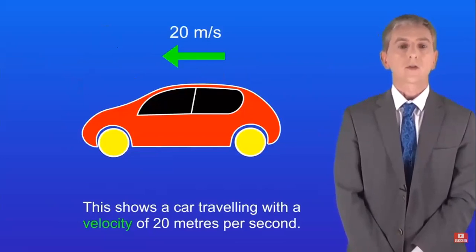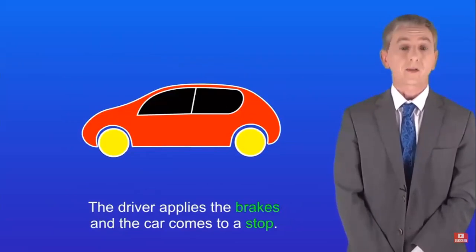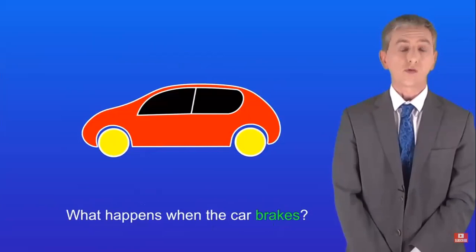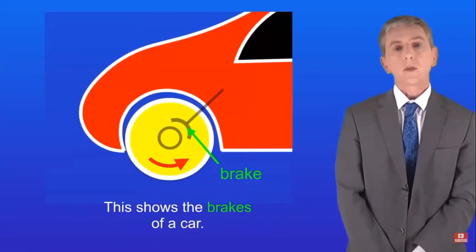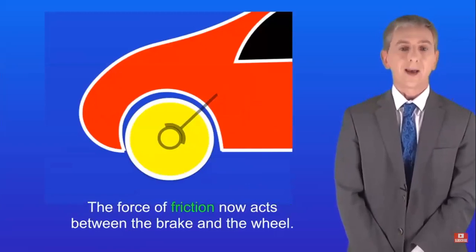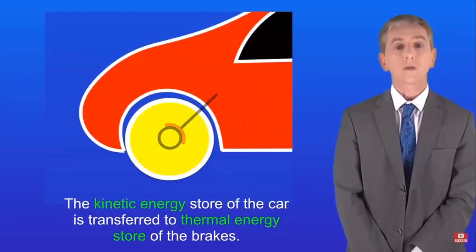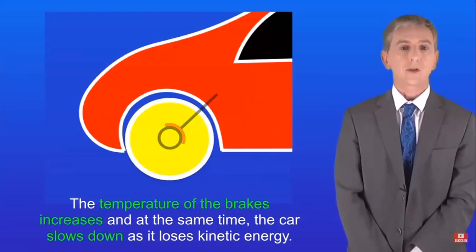Here's another example: a car travelling at 20 metres per second. The driver applies the brakes and the car comes to a stop. A moving object has a kinetic energy store. During braking, the brake presses against the wheel; friction acts between the brake and the wheel, and the kinetic energy store of the car is transferred to the thermal energy store of the brakes — the brakes heat up and the car slows down.